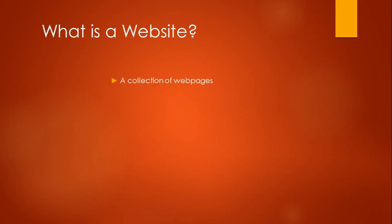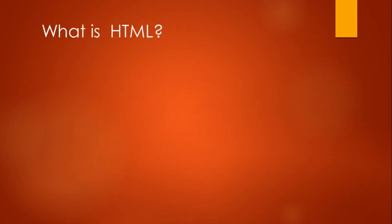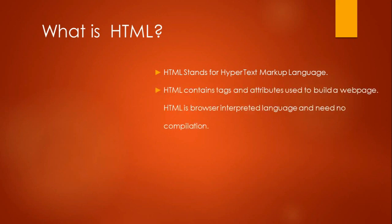A website is a collection of web pages. A website represents a centrally managed group of web pages containing text, images, and all types of multimedia files presented on the internet. A web page is a collection of HTML tags. So the question arises — what is HTML? HTML stands for Hypertext Markup Language.